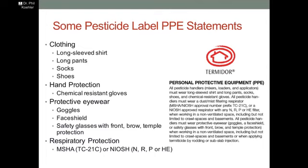A lot of people are using Termidor or Citronil in their pest control service. On the label it says for clothing: long-sleeve shirt, long pants, socks, and shoes are required. For hand protection: chemical resistant gloves. For protective eyewear, especially in crawl spaces or basements or confined areas: goggles, face shield, or safety glasses with front, brow, and temple protection are required. For respiratory protection: MSHA TC21C or NIOSH NRP or HE cartridges.